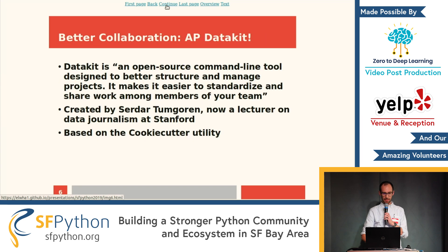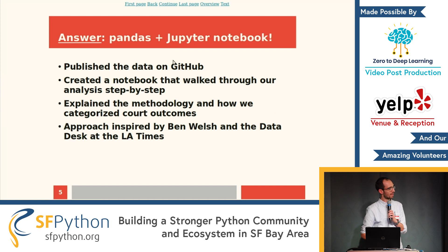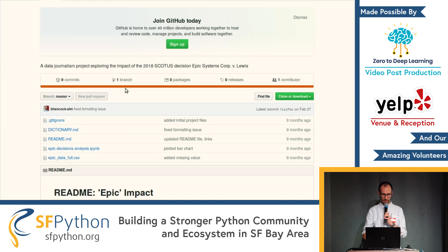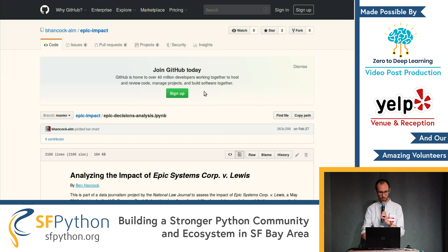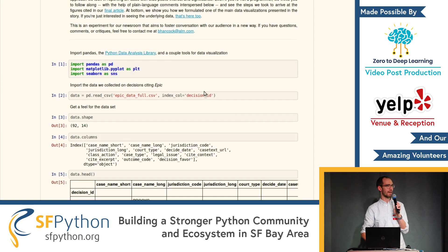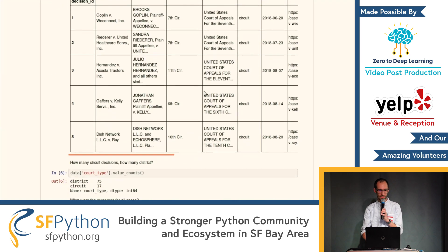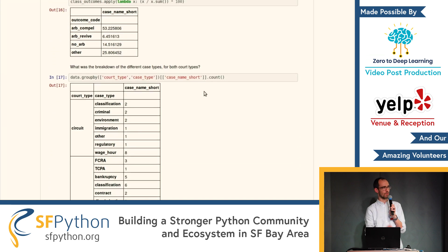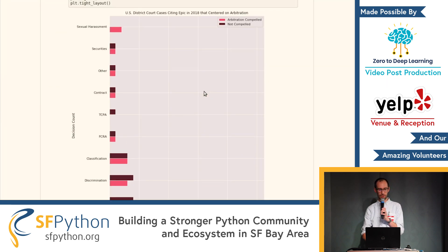So what we did was use pandas and a Jupyter notebook. We published all the data on GitHub and created a notebook that basically stepped through our analysis each step of the way. Every metric that we cited in the story you can follow there. It's a nice combination of story and data. I walked through how we grouped class actions, how we grouped sexual harassment cases, and things like that. At the bottom we used Matplotlib and Seaborn — though Bokeh is an amazing library, and I wish we'd used that.